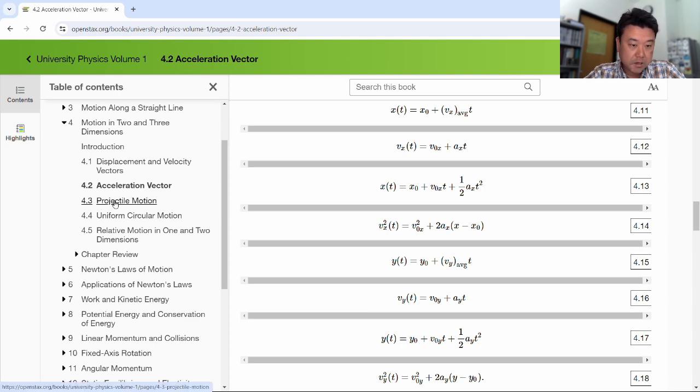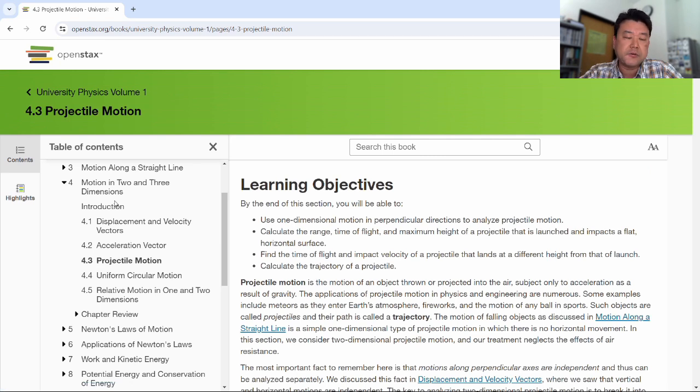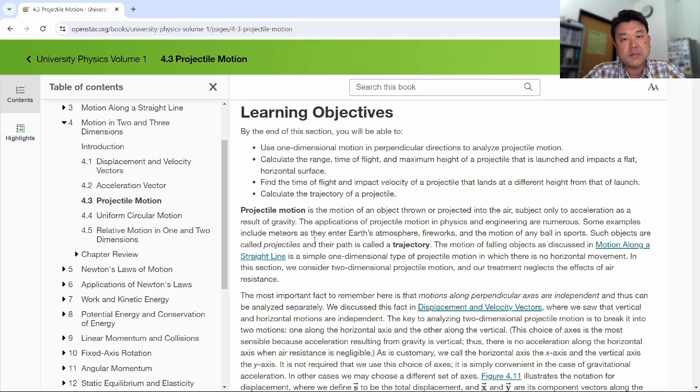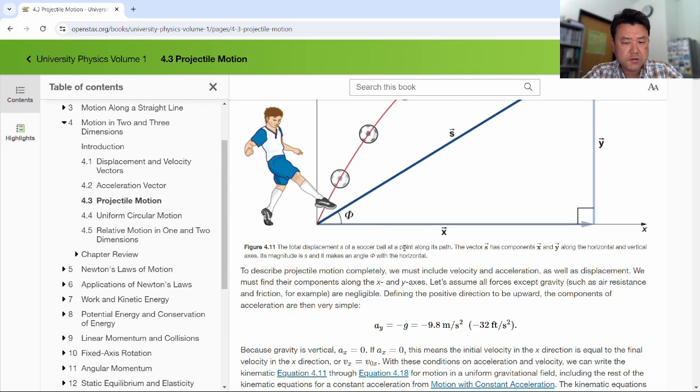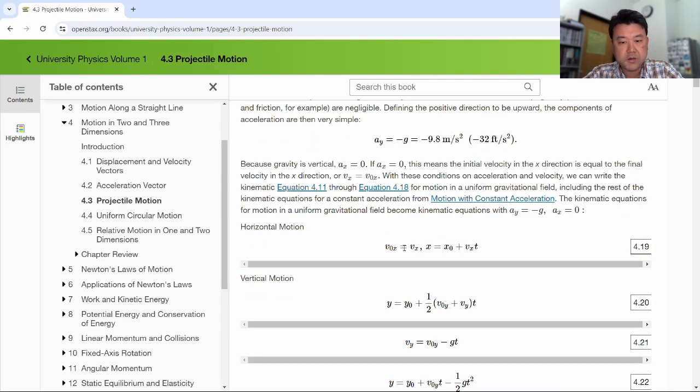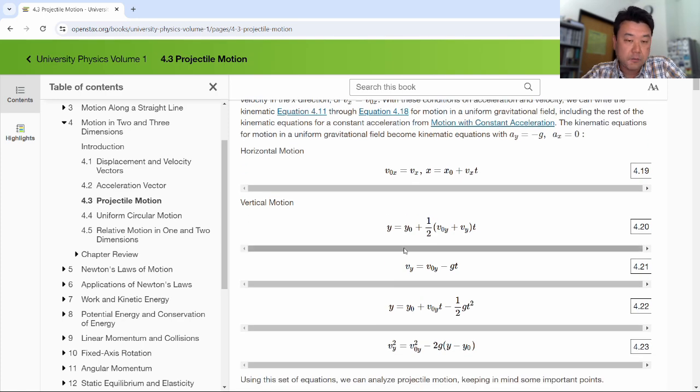Now, projectile motion is probably the most common and definitely the most practical example that you will see as we cover kinematics because there's so many examples of projectile motion. Basically, anytime you can ignore the influence of air resistance and it involves something thrown, something flying, not literally flying like with wings, but basically thrown, then it can be treated as a projectile motion. This describes lots of sports, describes other applications, often military. But this is a really good example of an application of a multi-step problem-solving strategy.